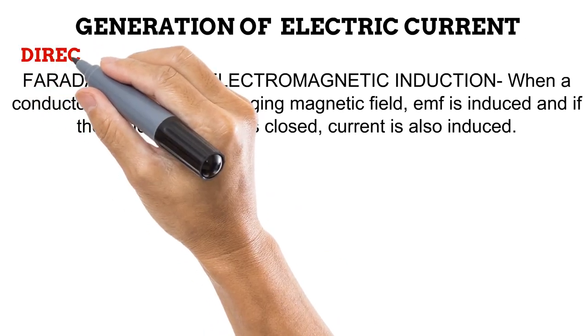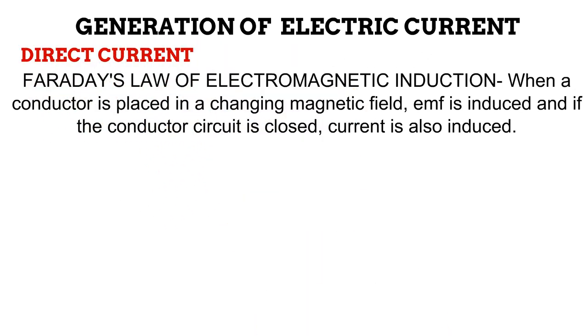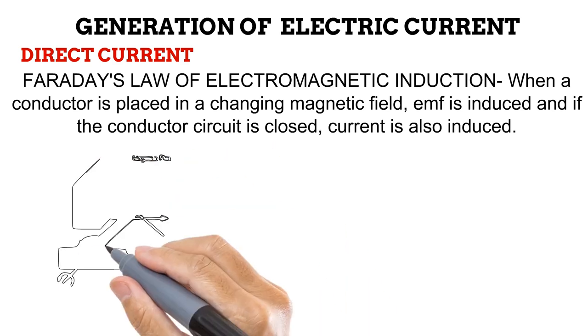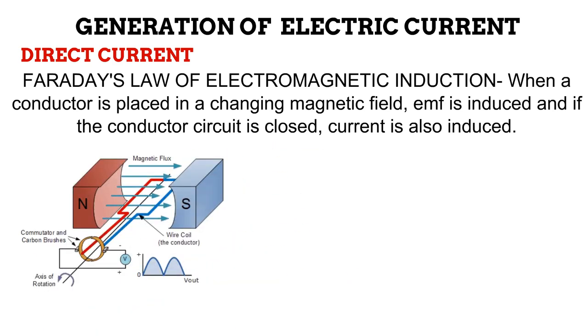We have already stated that generation of direct current is a modification of generation of alternating current. Let us look at it in a bit more detail. The direct current generator still has the loop of conductor wires placed between two magnetic poles, like in alternating current generators. However, instead of two slip rings, one ring that has been split into two is used. This is known as a split ring. Each half of the split ring is connected to a metal or carbon brush, which connects to the circuit. The split ring and metal brushes combined are known as a split ring commutator.